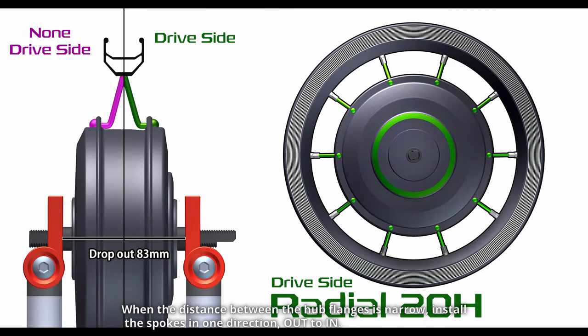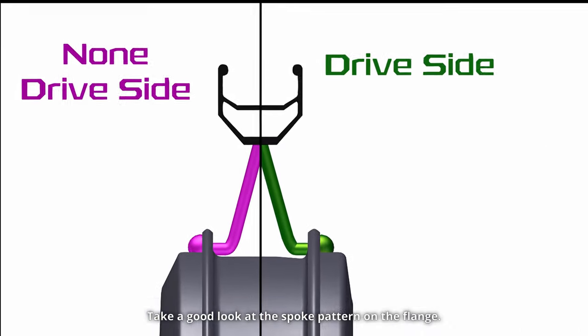When the distance between the hub flanges is narrow, install the spokes in one direction out to it. Take a good look at the spoke pattern on the flange.